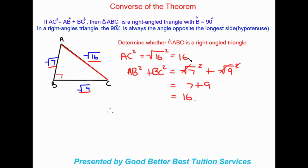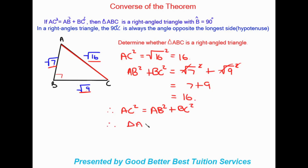We can see that they are equal. Therefore AC squared equals AB squared plus BC squared, and therefore triangle ABC is a right-angled triangle.